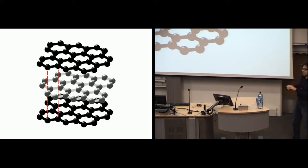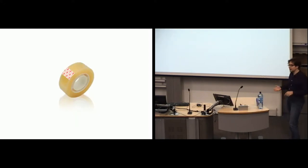The layers are actually reasonably weakly coupled. So now we take a thin piece of graphite, put it on top of Scotch tape, fold the Scotch tape and unfold. And that's it.